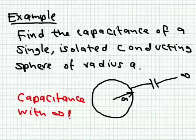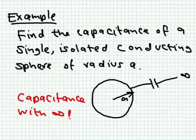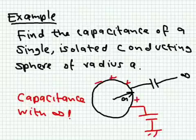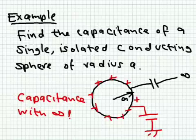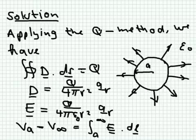Let's look at an example: find the capacitance of a single isolated conducting sphere of radius a. We don't have two conductors here, but we can assume the second conductor is at infinity. If we connect this conductor to a voltage source, charges accumulate on it to bring it to that potential — so it still acts as a capacitor and stores charge. We apply the same procedure to determine the capacitance, electric field, and so on.